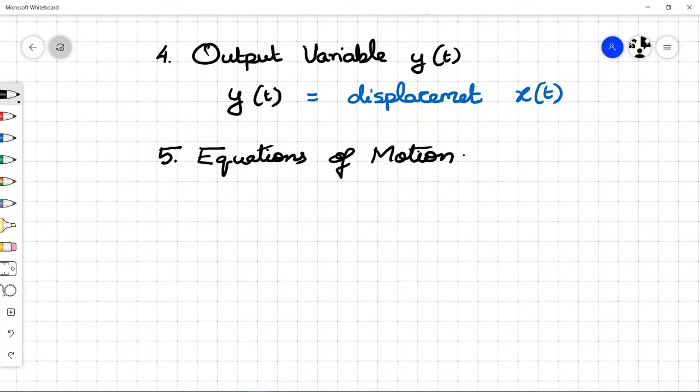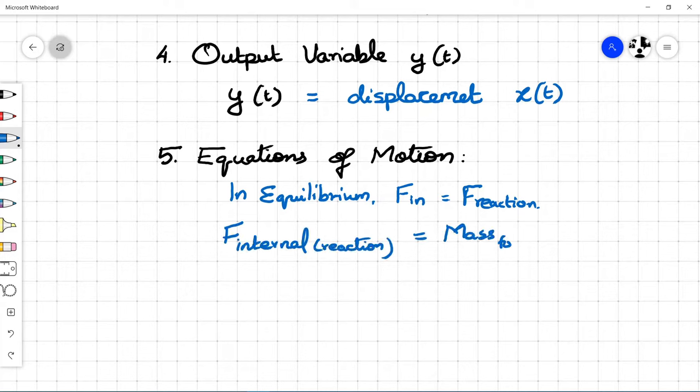Deriving the equations of motion is the final and important step. In an equilibrium condition, forces are balanced in the spring mass damper system. Applied force is equal to the force created due to mass, spring, and damper.